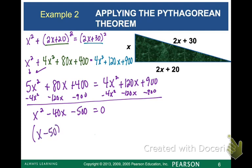When we factor, we get x minus 50 and x plus 10, because those two numbers add to negative 40 and multiply to negative 500. When I set each of those equal to 0, I get x equals 50 and x equals negative 10.